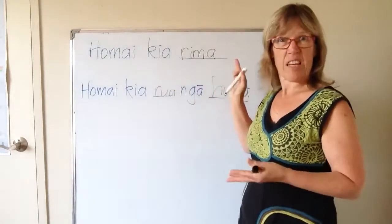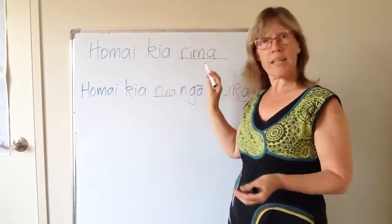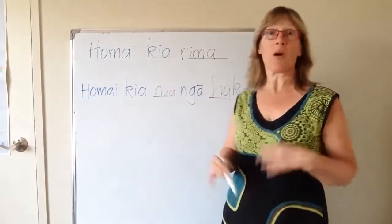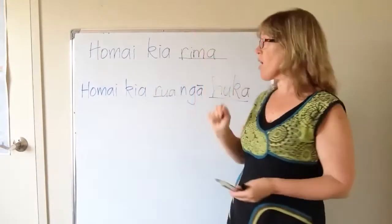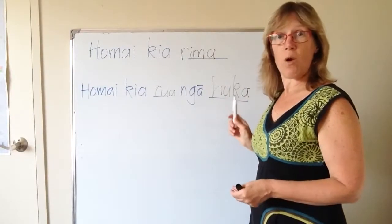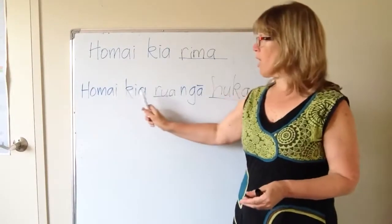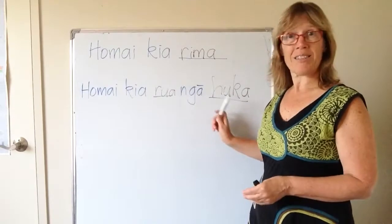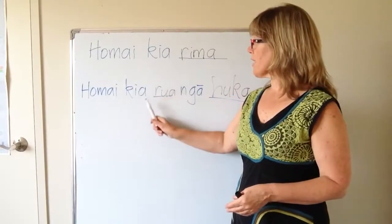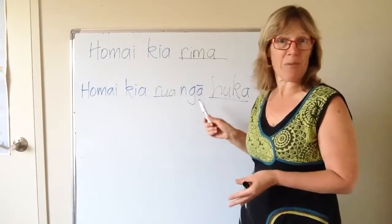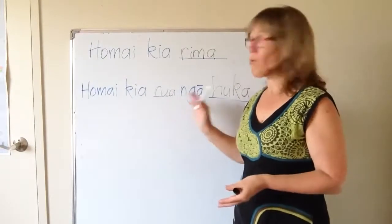You don't have to say the thing if we both know what we're talking about. But if you do want to clarify: 'ho mai kia rua nga huka', or 'ho mai kia waru nga tehati' — that's giving you eight T-shirts. 'Ho mai kia rima nga mati mati' — give me five fingers. 'Ho mai kia toru nga pakipaki' — give me three claps.